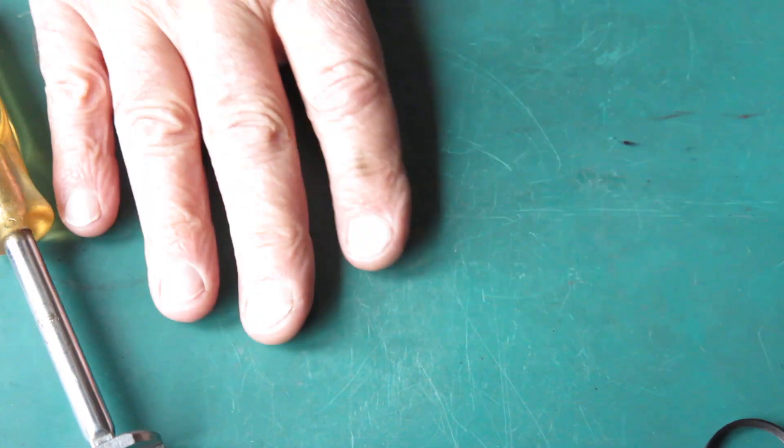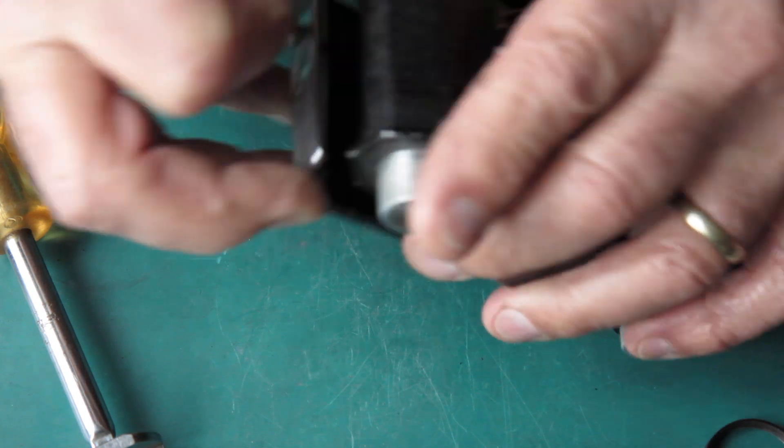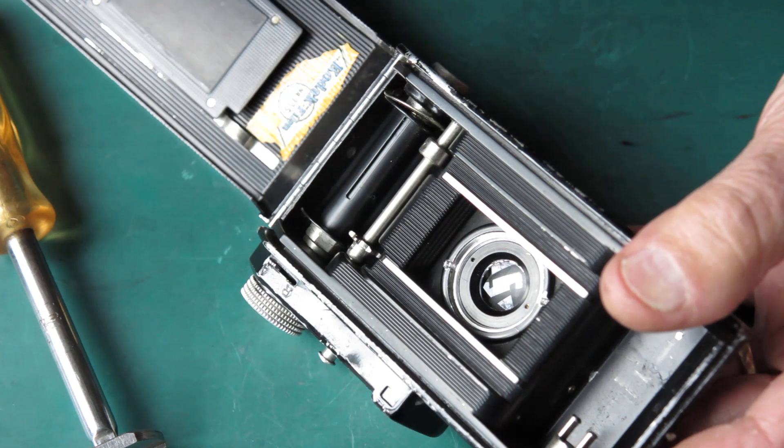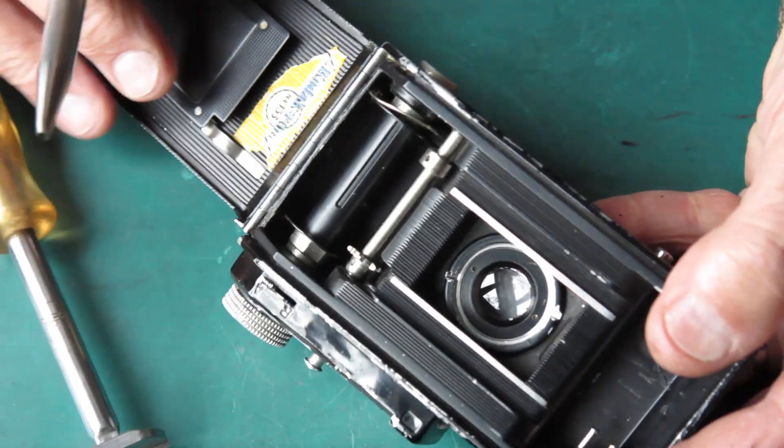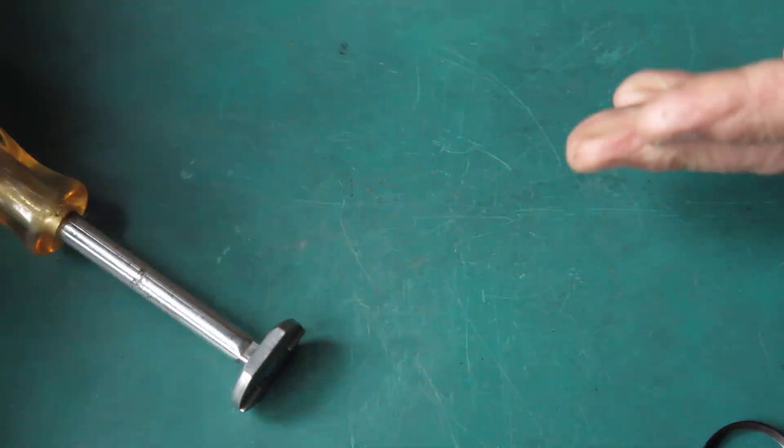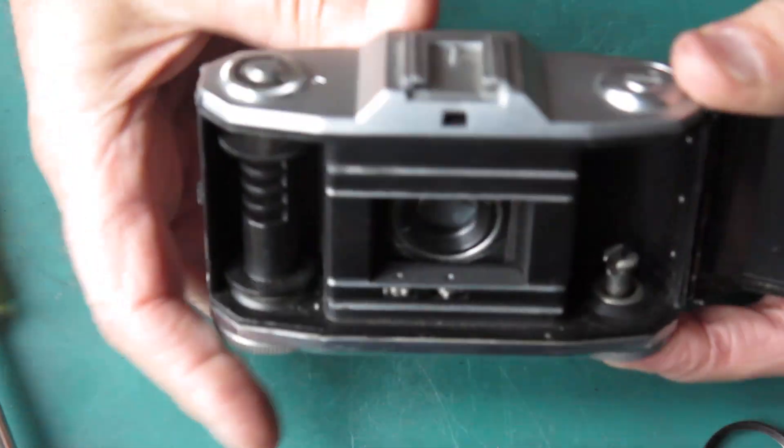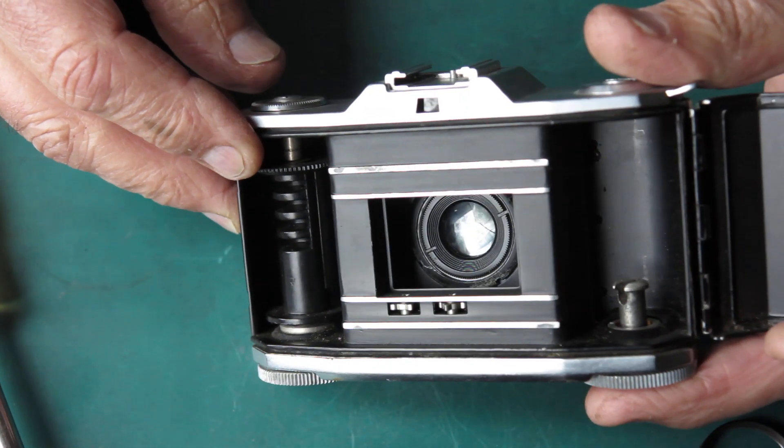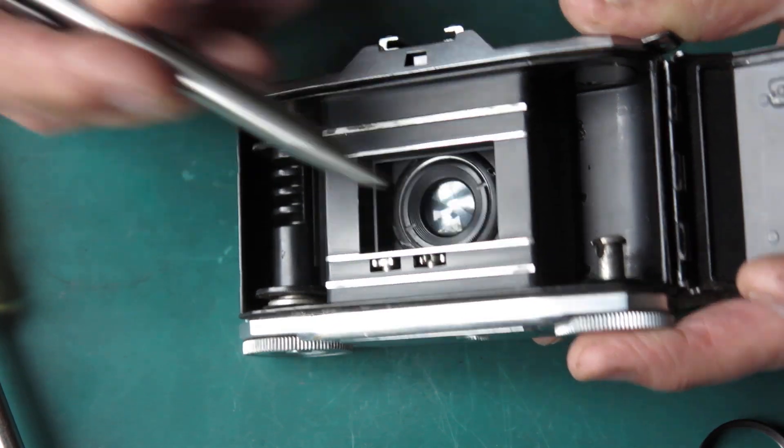So what other cameras have we got that we could demonstrate here? Let's have a quick look at these. This is an old Retinette. You can see this has got a slightly different retaining ring, but again we've got two big notches there. These tools would work quite well for that. This one now here, this is an Ikonta 35.